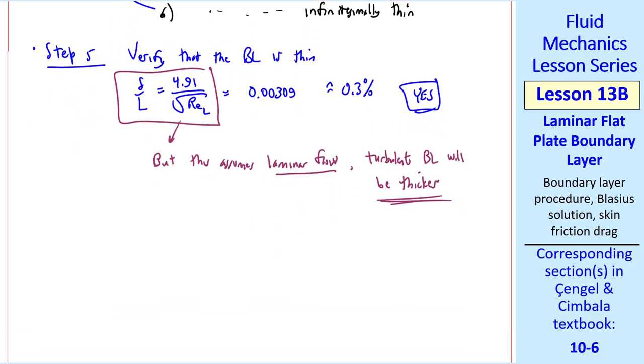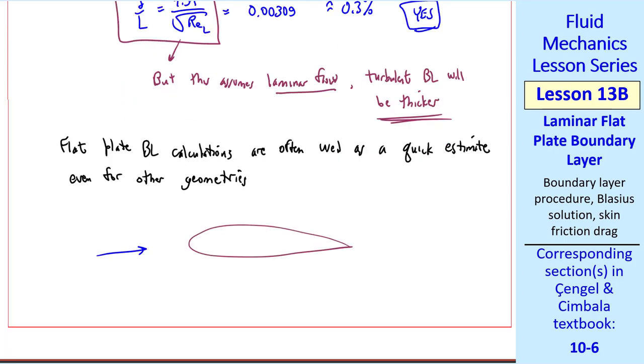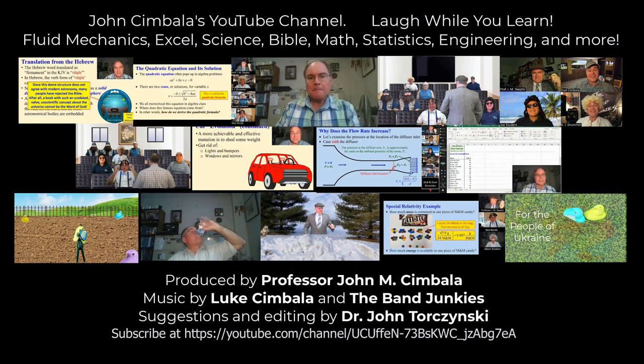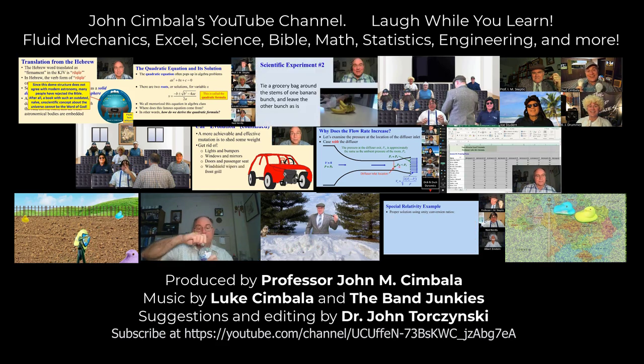I'll make one final comment. Flat plate boundary layer calculations, like we did here, are often used as a quick estimate, kind of a back of the envelope estimate, even for other geometries. For example, if we have flow over some kind of a wing, and we want to estimate the skin friction drag, we can use the flat plate boundary layer results as a quick estimate, using arc length as L. It won't be exactly correct, but it'll be in the right ballpark. Thank you for watching this video. Please subscribe to my YouTube channel for more videos.